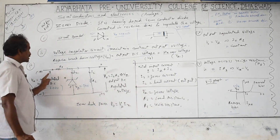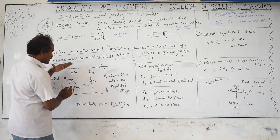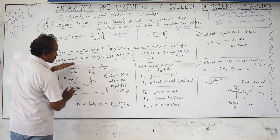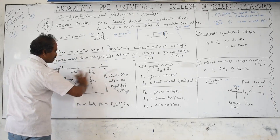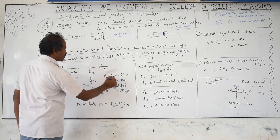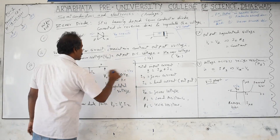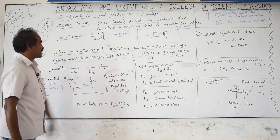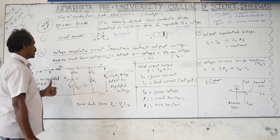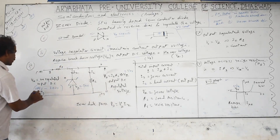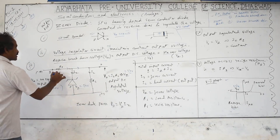The voltage across the Zener diode remains constant at Vz when input exceeds Vz, so the output voltage Vo = Vz. The load resistance voltage IL × RL also equals Vo = Vz, since they are in parallel. For example, if Vz = 50 V and input is 100 V, the remaining 50 V appears across the series resistance. If input is 200 V, then 150 V appears across the series resistance.